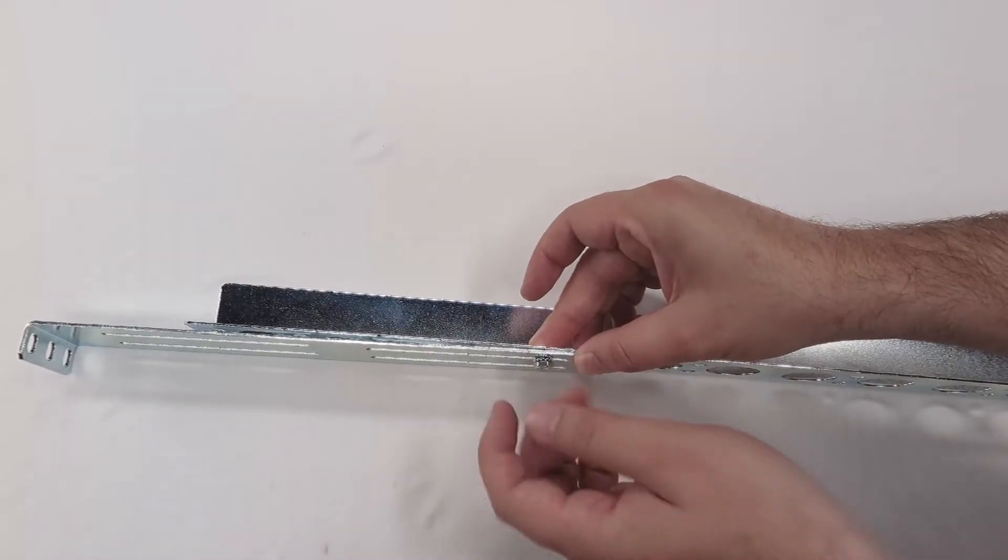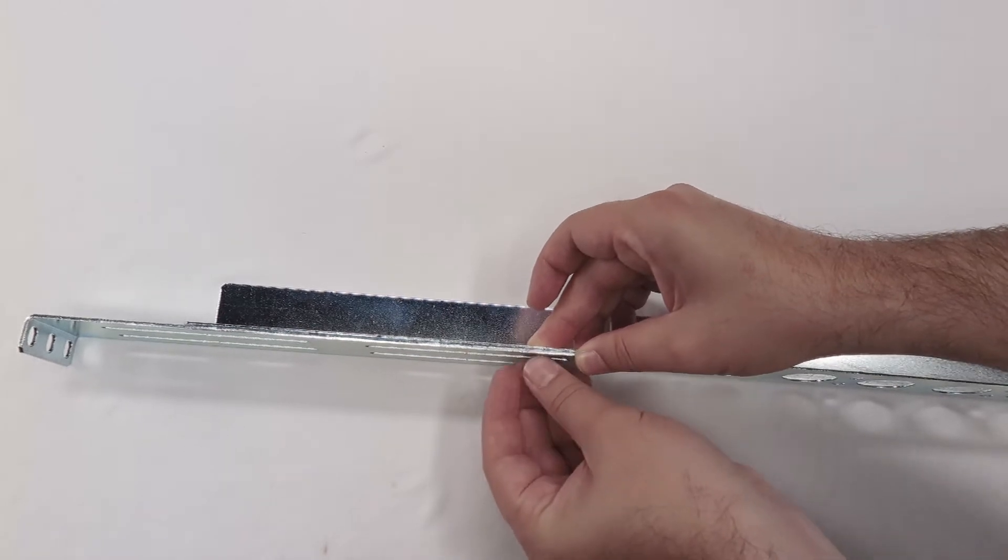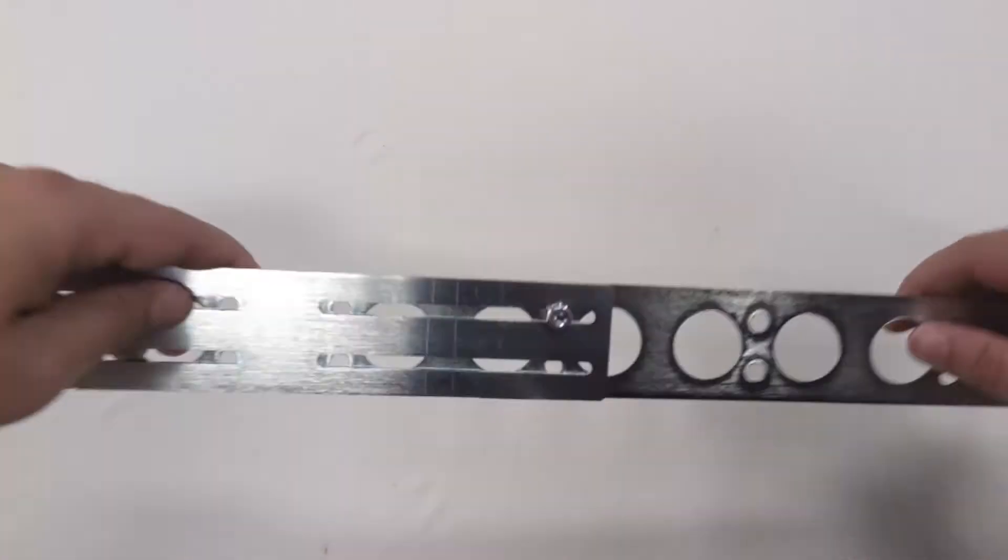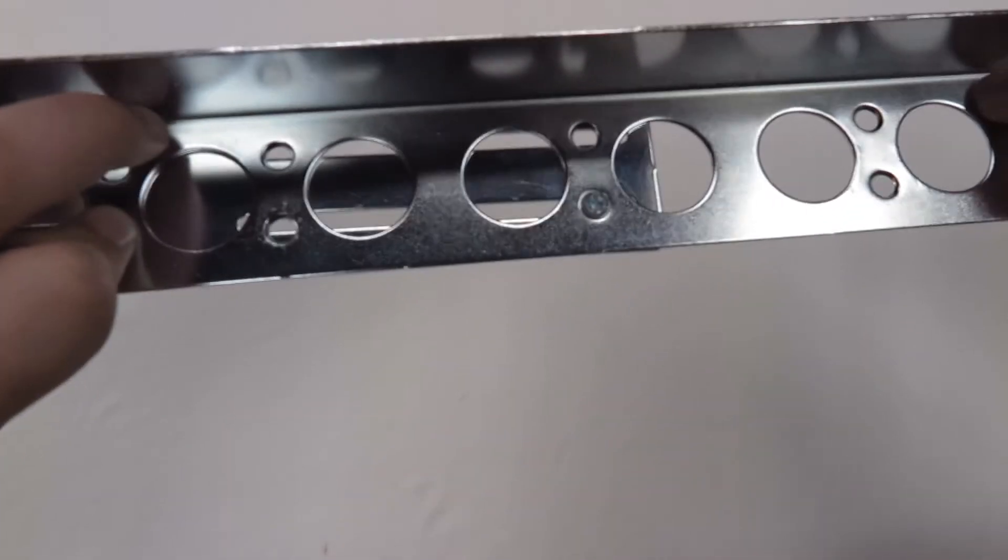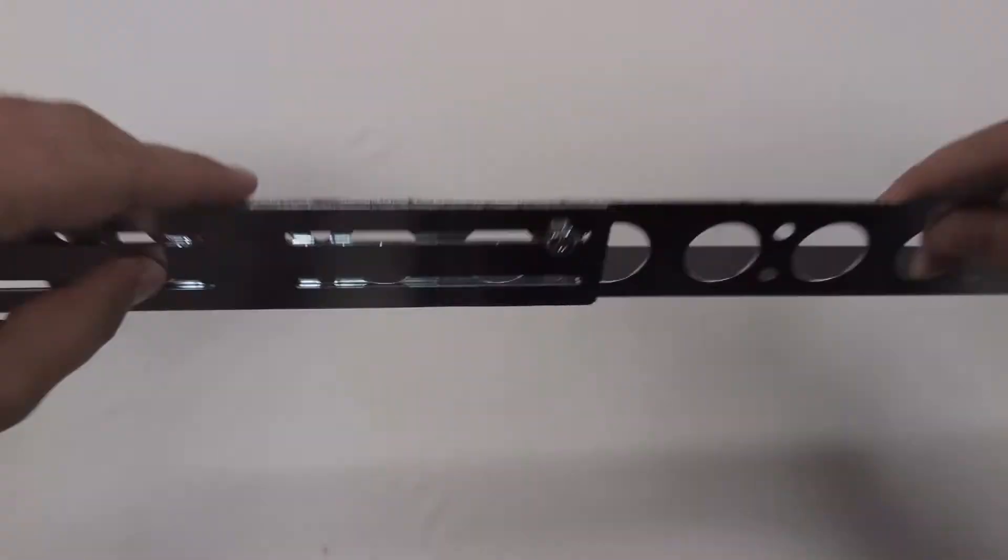Roughly estimate how long your rails will need to be to fit in your rack. And once you find it, lightly secure a screw into the rail so that it's assembled but still loose enough to adjust depth.